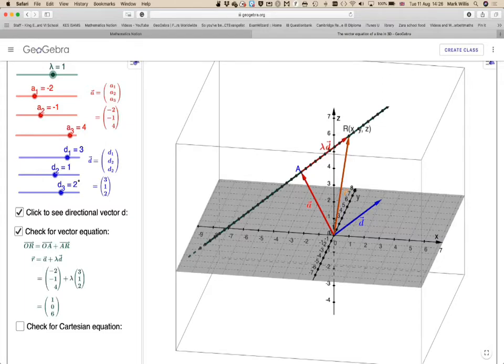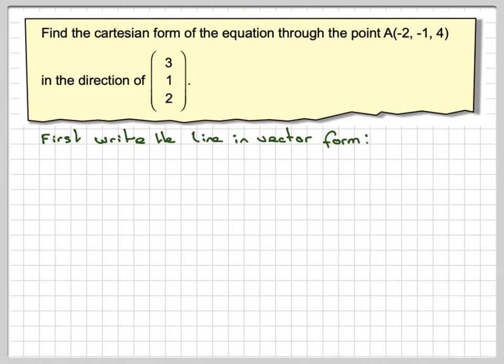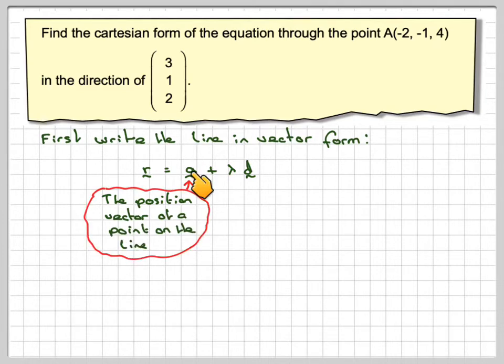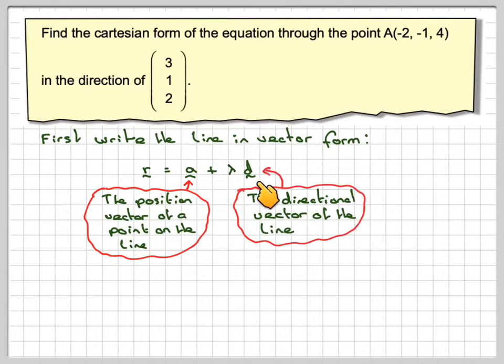The vector equation of the line is made up of a known point, which in this case is A, plus some multiple of a directional vector, which we've given in the question. So R equals the point plus lambda times D. This is the position vector of a point on the line, and this is a directional vector. The directional vector only needs to be parallel to the line—it doesn't have to be on the line. So R in this case will be (-2, -1, 4) plus lambda(3, 1, 2). That's fairly straightforward.